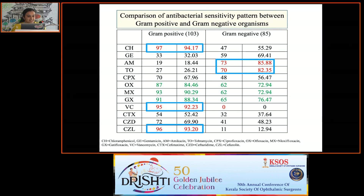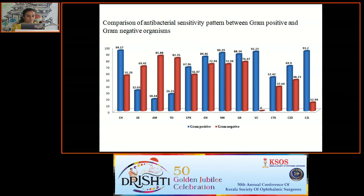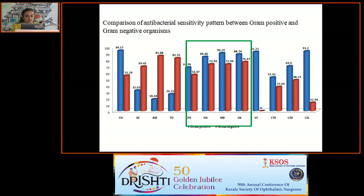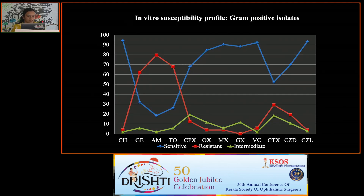For gram-positive organisms, sensitivity was highest for Chloramphenicol, Vancomycin, and Cephazolin. For gram-negative organisms, it was highest for Aminoglycosides. Both groups of organisms showed reasonably higher sensitivity for Fluoroquinolones.